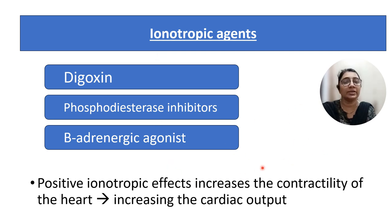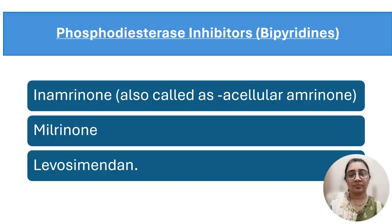Inotropic drugs like digoxin, phosphodiesterase inhibitors, and beta adrenergic agonists are all positive inotropic drugs that increase contractility of the heart and increase cardiac output. We have already discussed cardiac glycosides in part one, and now we are going to discuss other groups of positive inotropic drugs.